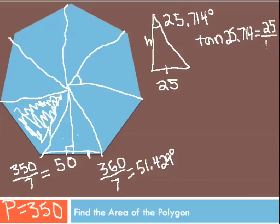We solve that by typing in 25 divided by tangent of 25.714, and we get a height of about 51.913.